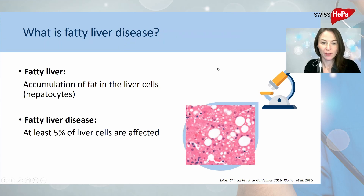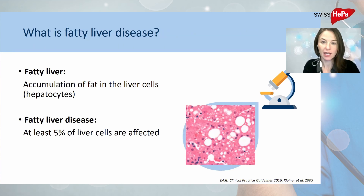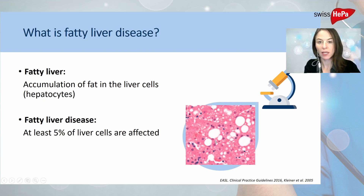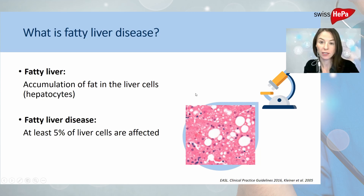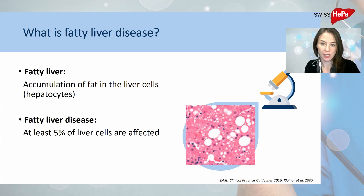So what is fatty liver disease? Fatty liver is a condition where fat is accumulated in liver cells, the so-called hepatocytes. You can see these white spots in the liver cells — this is fat accumulation. If more than 5% of liver cells are affected, we call this fatty liver disease.